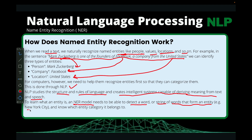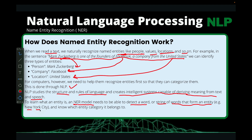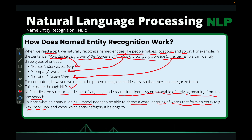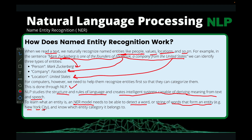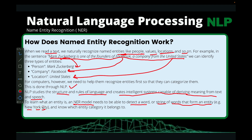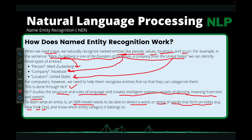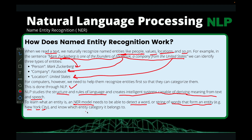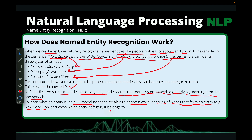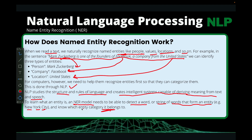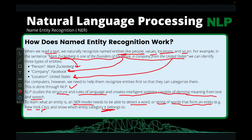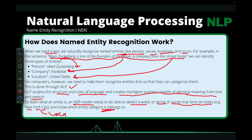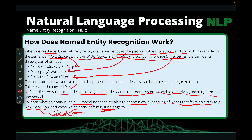For instance, take 'New', 'York', and 'City'. The model has to identify that when 'New', 'York', and 'City' come together, it's the name of a place. Then it will know which entity category to assign it to — in this case, it will classify it as a location.